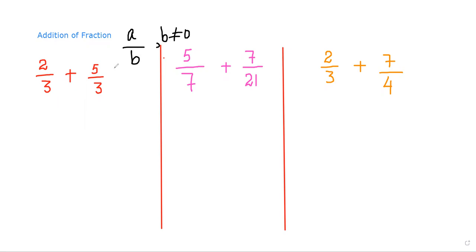How will we add fractions? The first step is to look at the denominator. The top number is called the numerator and the bottom number is called the denominator. The important step is that the denominator must be the same number. If it is not the same, we will make it the same.